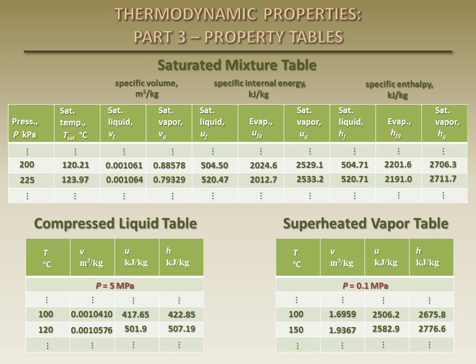It's important to note that values of internal energy and enthalpy cannot be measured directly. They are determined from relationships between other measurable thermodynamic properties. These relationships provide values for the changes in properties and not for the properties at a specified state. Therefore, a convenient reference state is chosen where the internal energy and enthalpy are assigned values of zero, and the values in the tables represent changes in properties from this reference state.